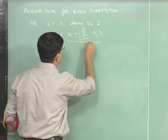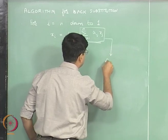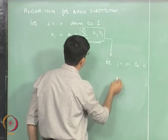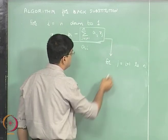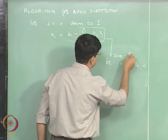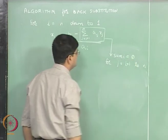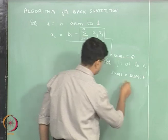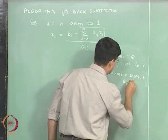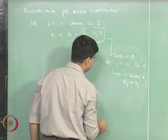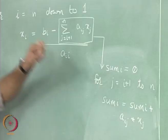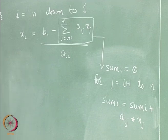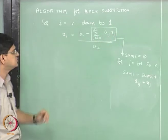To compute the summation of a_ij x_j for j equal to i+1 to n, we introduce a running sum variable. We initialize sum_i equal to 0, then update sum_i as sum_i plus a_ij multiplied by x_j for each j. Then x_i is computed as b_i minus sum_i divided by a_ii. This is the rough algorithm for the back substitution step.